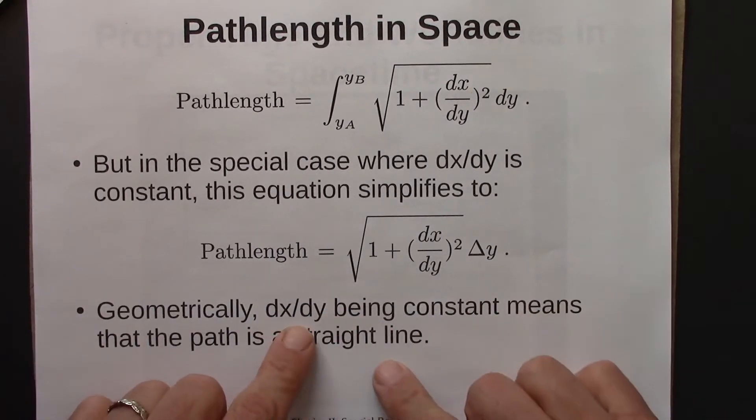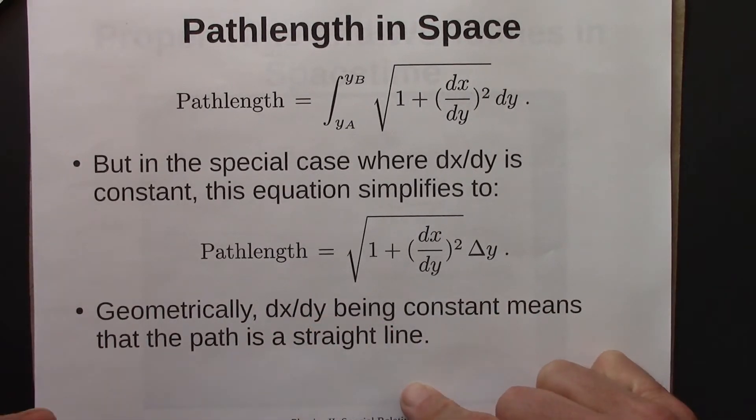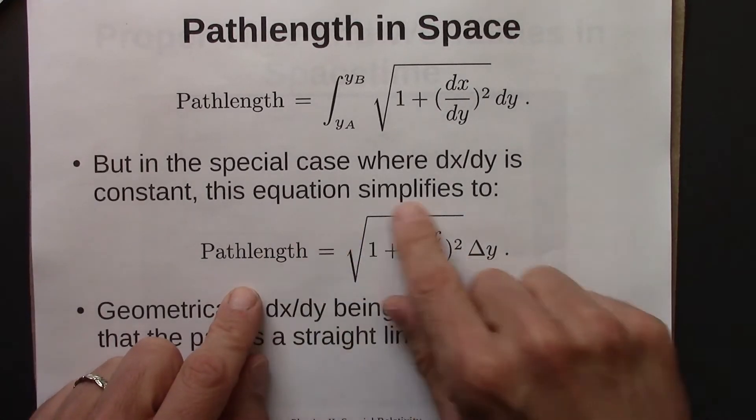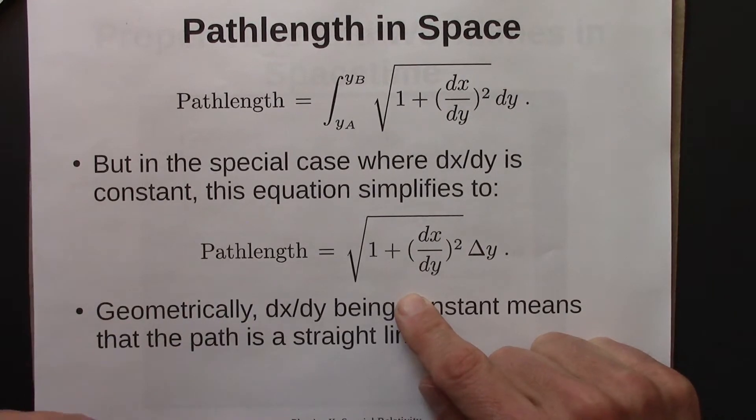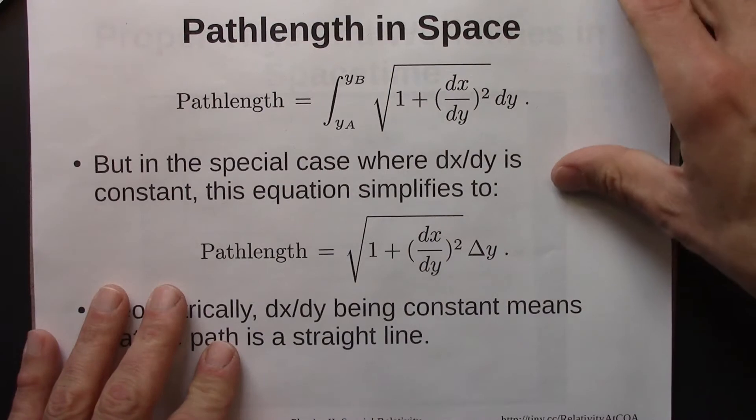So geometrically, dx dy being constant just means that this path is a straight line. So really this is just a fancy way of writing the Pythagorean formula for the length of the hypotenuse of a triangle.